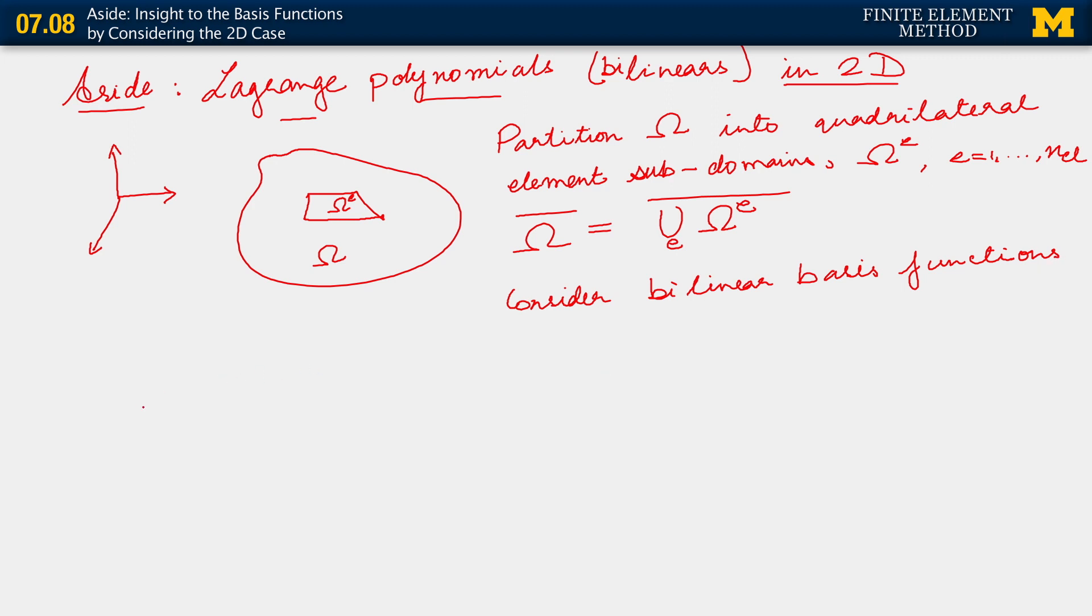Consider bilinear basis functions. The picture that we use in order to help us with the construction of these basis functions is one that continues along this theme of using a parent subdomain from which every actual physical element is drawn. This is omega e. And now we suppose that we can construct this from a parent subdomain, which is now a square.